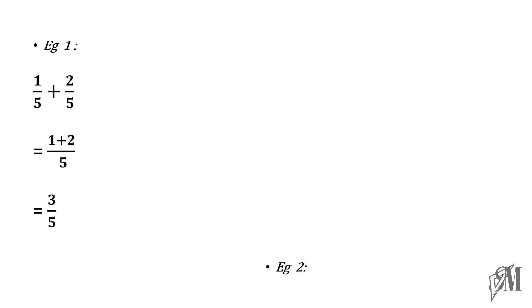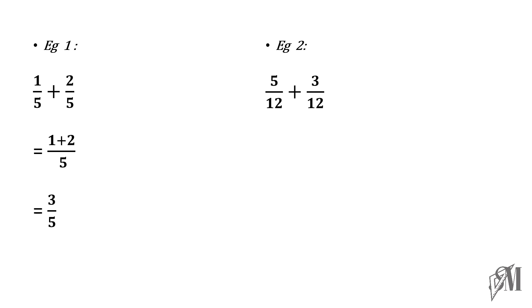Look at this example: 5 over 12 plus 3 over 12. Once again, the denominators are the same. So, we simply add 5 plus 3 and we get the answer as 8 over 12. This is how we add fractions with the same denominator.